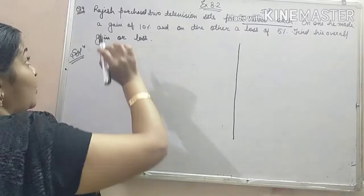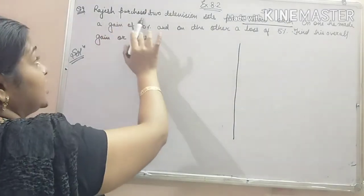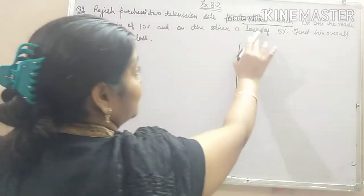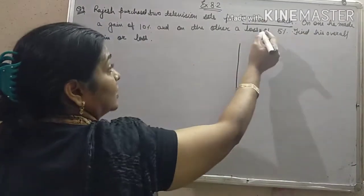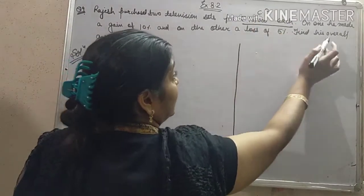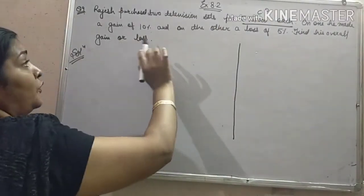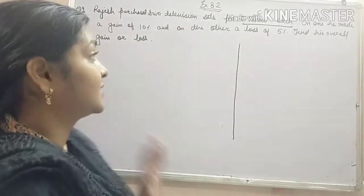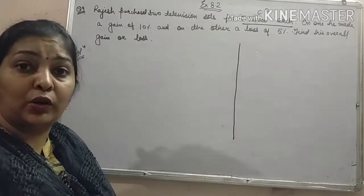Dear students, in problem 9, it is given: Rajesh purchased 2 television sets for Rs. 16,000 each. It is the CP. On one, he made a gain of 10% and on the other a loss of 5%. Find his overall gain or loss percent.